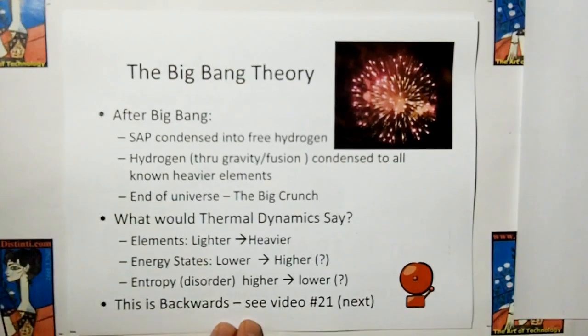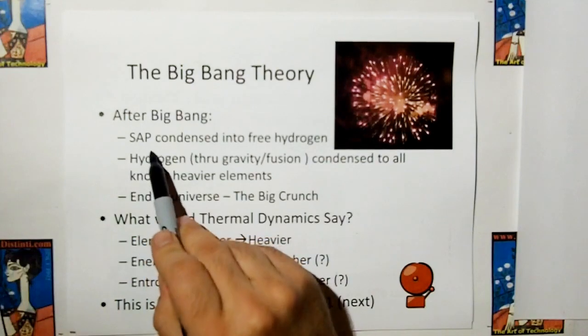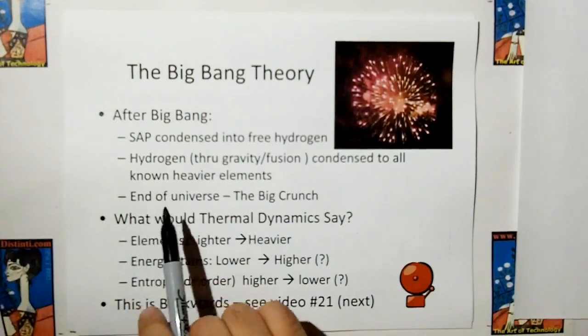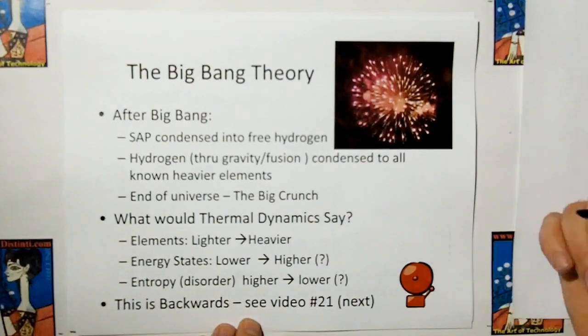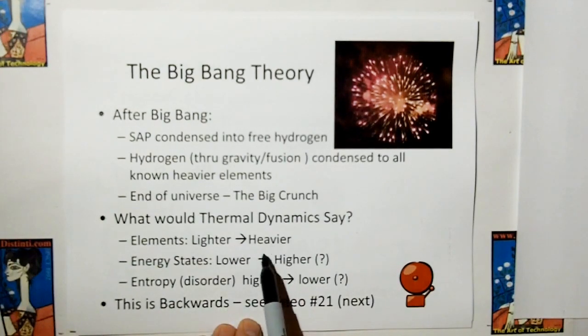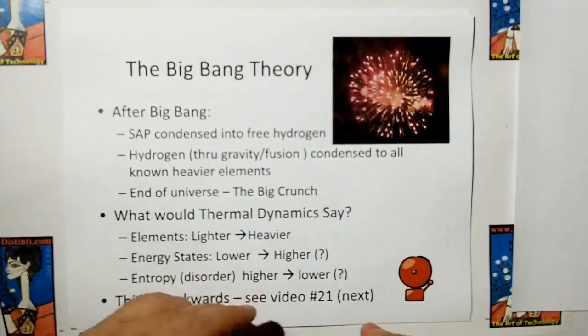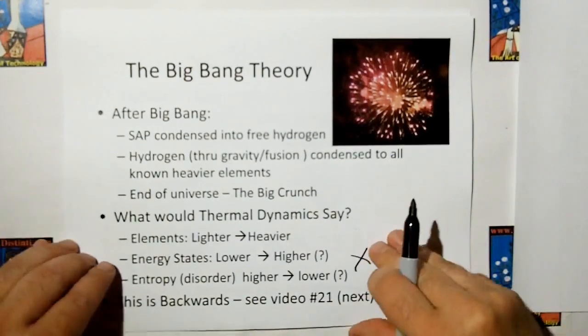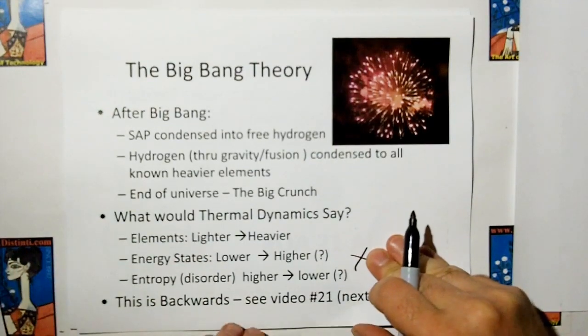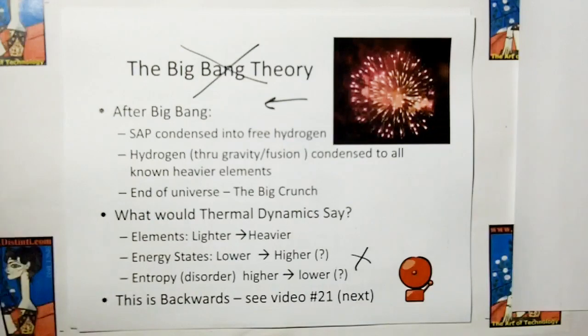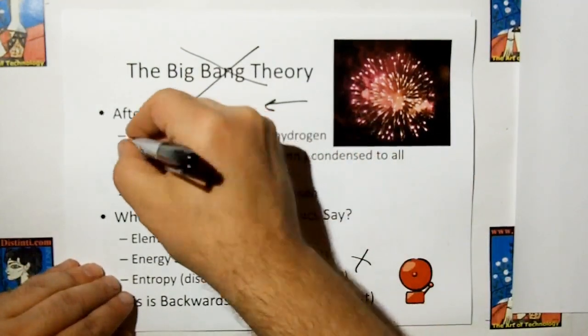Big Bang Theory. Let's apply reciprocal thinking to the Big Bang Theory. After the Big Bang, they say subatomic particles condensed into free hydrogen. And through gravity and fusion, hydrogen is condensing to all heavier known elements. The end of the universe is supposedly going to be a big crunch. But this is kind of in violation of thermodynamics, because if elements are going from lighter elements to heavier elements, then energy states are going from lower to higher. That goes opposite to my understanding. And that means if we're going to more ordered elements, that means our entropy is going from higher to lower, which is wrong. It means we're going to a more ordered universe. According to thermodynamics, the universe should be going to lower and lower states, higher and higher entropy. We are going backwards. So we need some reciprocal thinking. Video 21, we're going to show you that the Big Bang Theory is wrong. The universe is going the other way. We're going from higher energy states, denser matter, and the universe is evaporating into lighter and lighter matter. Hydrogen and subatomic particles are going to be the end of the universe, not the beginning.